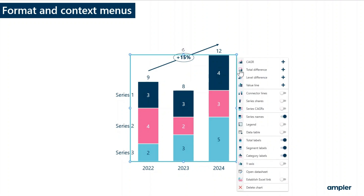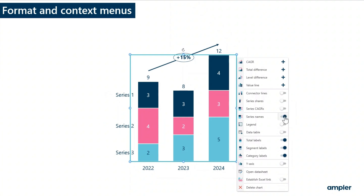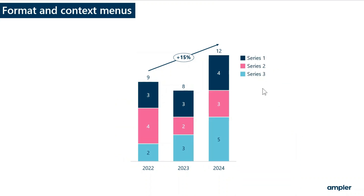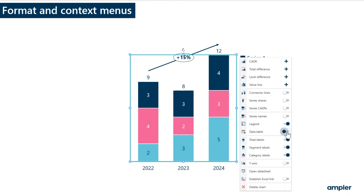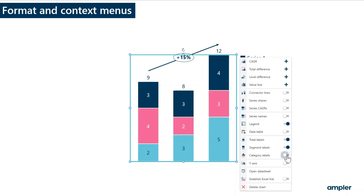Further down in the menu, you'll find options to toggle on and off series shares, series names, a legend that shows the series, a data table, and options to toggle on and off labels such as total labels, segment labels, category labels, and finally an option to toggle on and off a y-axis, and if one axis has already been added to the chart, a second y-axis.